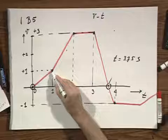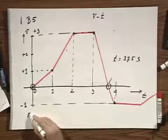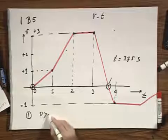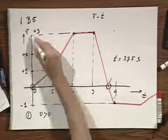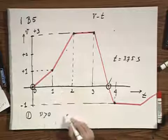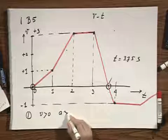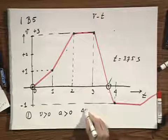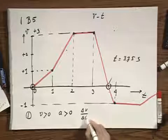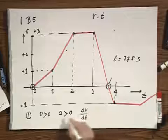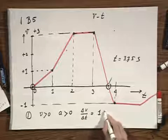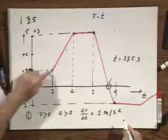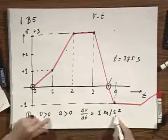Notice that during the first second, the velocity is 0 and increases — it is positive and increasing linearly. So the acceleration A must also be positive. A, which is delta V divided by delta T, equals 1 meter per second squared, since delta V changes by 1 and delta T also changes by 1.